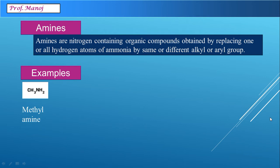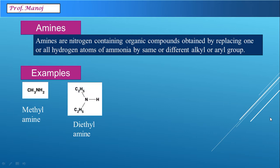We can see different examples of amines. As we know, ammonia has the formula NH3. If I replace one hydrogen of it, I will get a structure CH3NH2, which we call in the common system as methyl amine. Similarly, I can replace two hydrogen atoms of ammonia by two ethyl groups to get a structure called diethyl amine. On the other hand, we can replace all three hydrogen atoms of ammonia to get trimethyl amine.